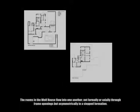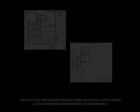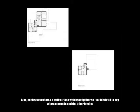The rooms in the Wolf House flow into one another, not formally or axially through frame openings but asymmetrically in a step formation. Each space shares a wall surface with its neighbour so that it is hard to say where one ends and the other begins.